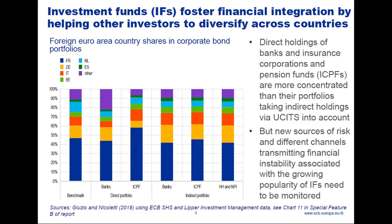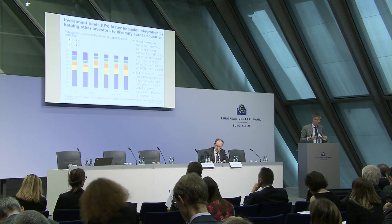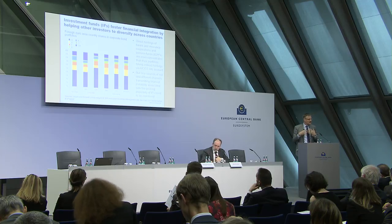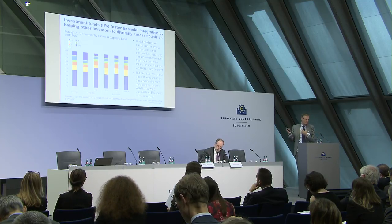Looking at the third and fifth columns — for ICPFs, meaning insurance corporations and pension funds — the third pillar shows direct holdings of corporate bonds across countries, and the fifth pillar shows indirect holdings including those via investment funds, via UCITs. When you move right, the colors become somewhat more uniform, reflecting that UCITs help other investors like insurance corporations, pension funds, and banks to diversify better across countries. So in this regard, they are helpful for quantity-based financial integration.